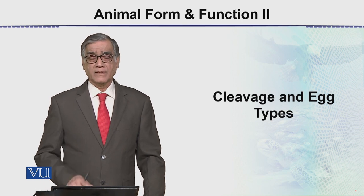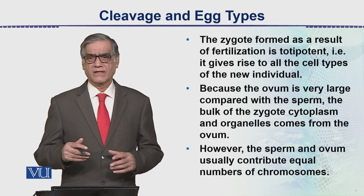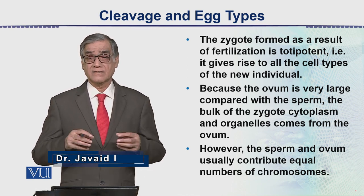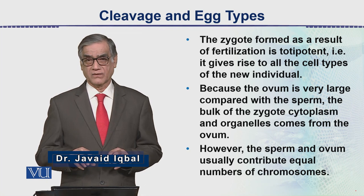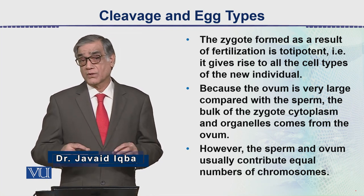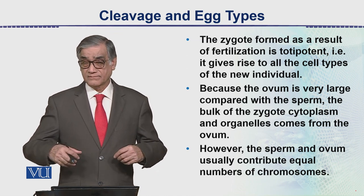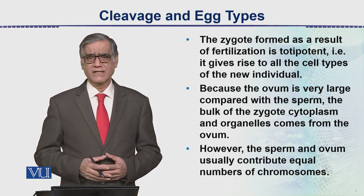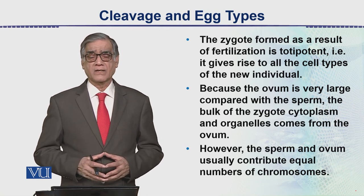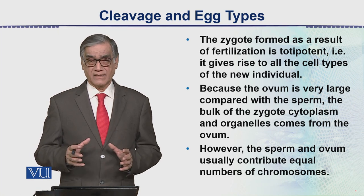Now what is the difference between cleavage and normal cell division? When a normal cell divides, its size decreases because one parent cell divides into two daughter cells, and after that it grows again, then it divides again. This is what we call mitotic division, and all cells formed this way are of equal size.